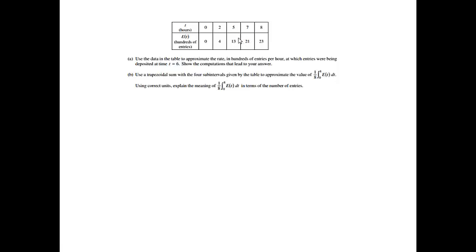All right, part A says to use the data in the table to approximate the rate in hundreds of entries per hour at which entries were being deposited at time t equals 6. Show the computations that lead to your answer.